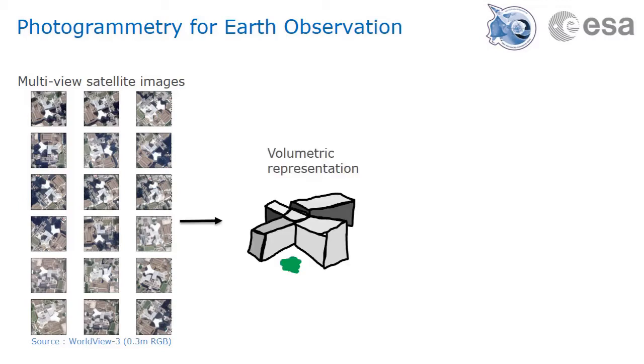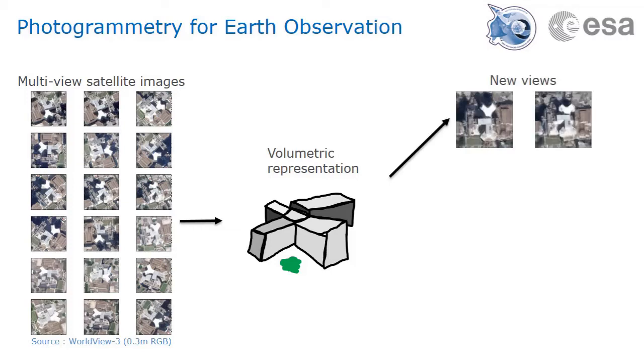The idea of photogrammetry is to reconstruct a full 3D representation of the scene based on the 2D images alone. This 3D model is then useful to render new views from previously unseen viewing angles or under different lighting conditions.